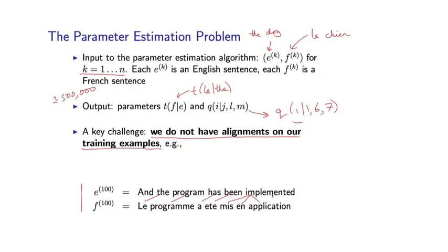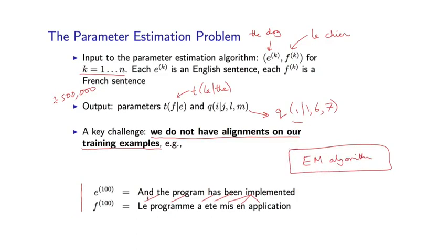That is going to mean that we need to use something called the EM algorithm, which is a rather remarkable algorithm. It can be used for estimation in scenarios where part of the data is hidden or missing — in this case, the alignments are unobserved.